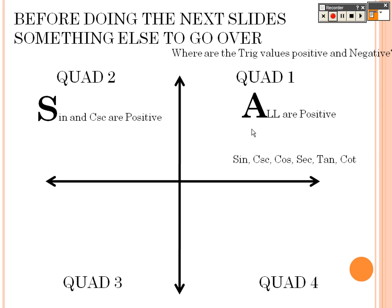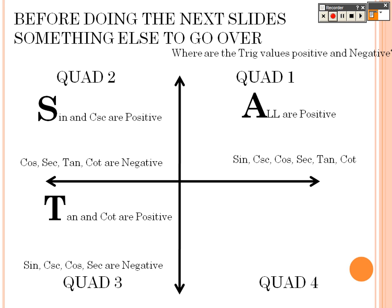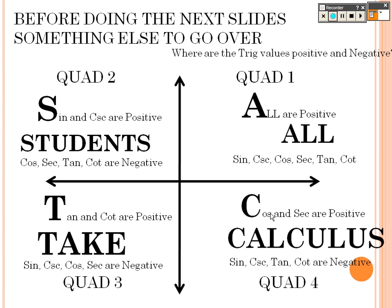We've got to remember where everything's positive and negative. All are positive here. Sine and cosecant are positive here, and everything else is negative. Tangent is positive in the bottom, but everything else is negative. Cosine and secant are positive, but everything else. So all students take calculus. All students take calculus.